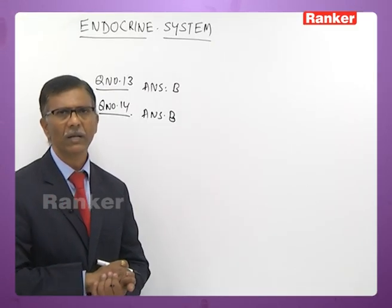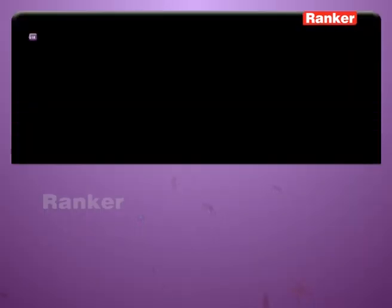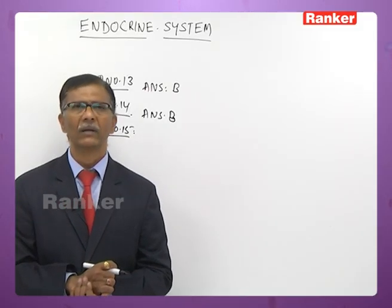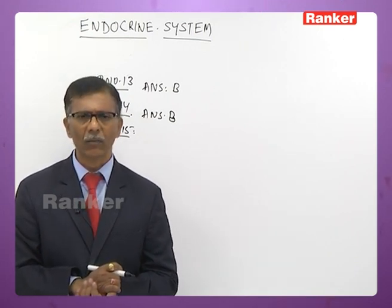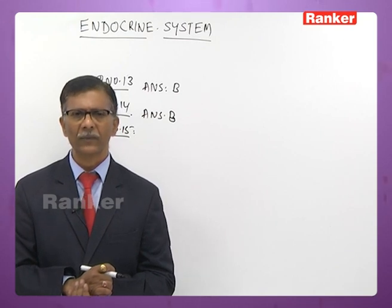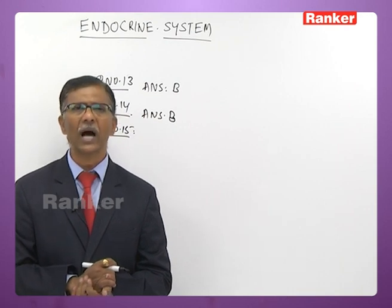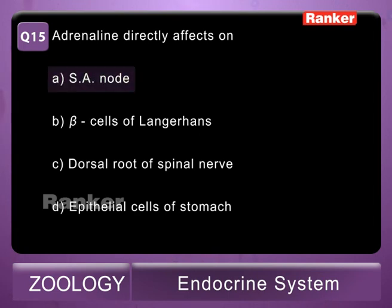Fifteenth question: adrenaline directly affects A - SA node, B - beta cells of islets of Langerhans, C - dorsal root of spinal nerves, D - epithelial cells of stomach. Adrenaline is the fight-and-fright hormone concerned with glycogenolysis and increasing heartbeat. It increases heartbeat by activating the SA node. The correct answer is A — SA node.